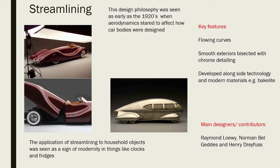Next is Streamlining, a design philosophy seen as early as the 1920s when aerodynamics began to affect how car bodies were designed — particularly through F1 and car racing. Key features are very flowing curves, the idea that things should look like they're moving while standing still, and smooth exteriors bisected with chrome detailing. It was developed alongside modern materials like Bakelite, a thermoplastic of the time. Streamlining was applied to household objects like clocks and fridges as a sign of modernity. Main designers include Raymond Loewy and Henry Dreyfuss.